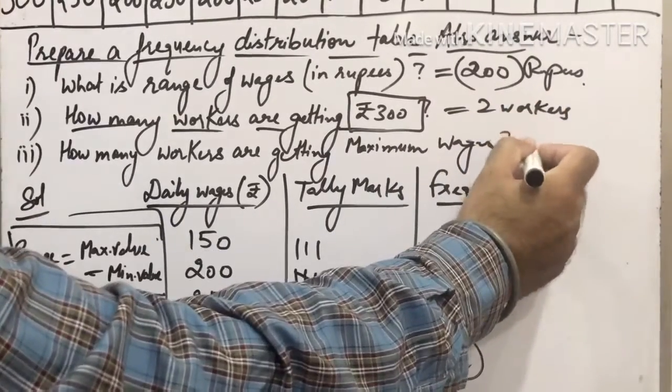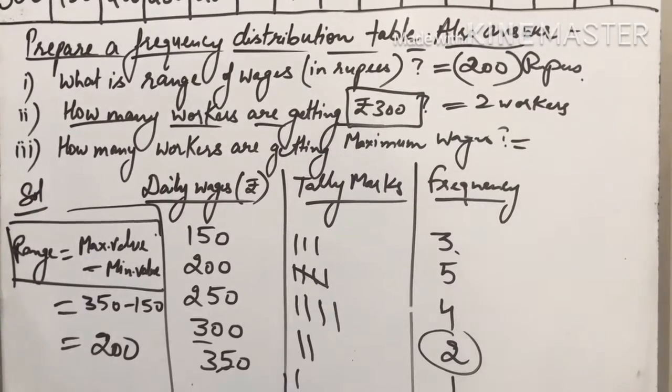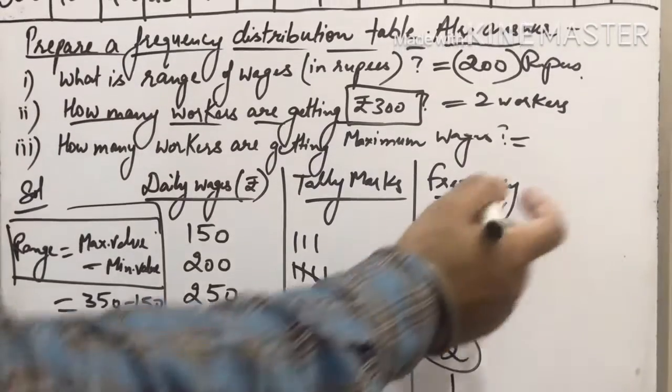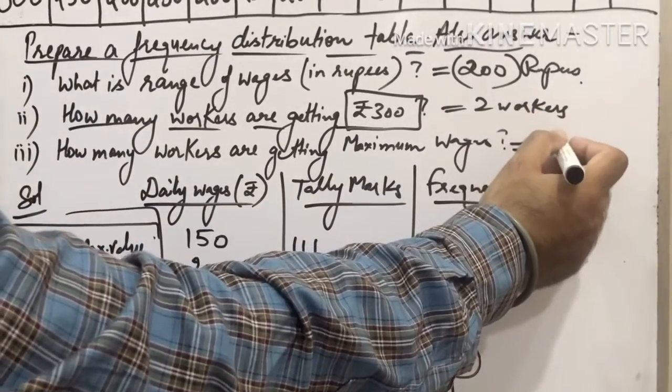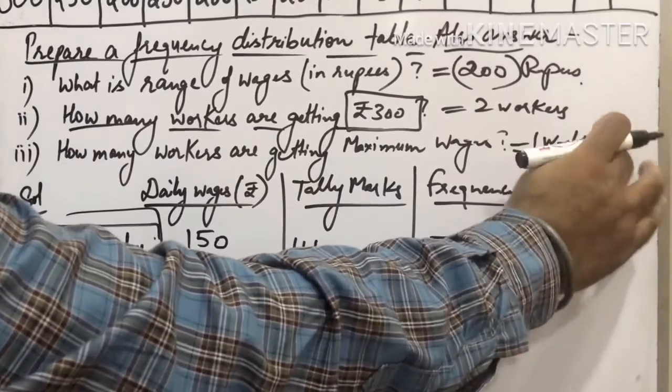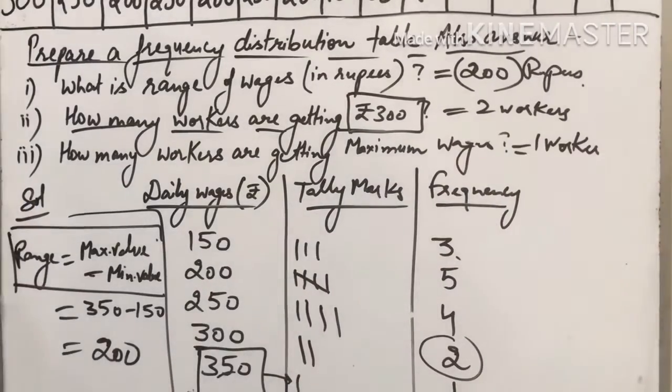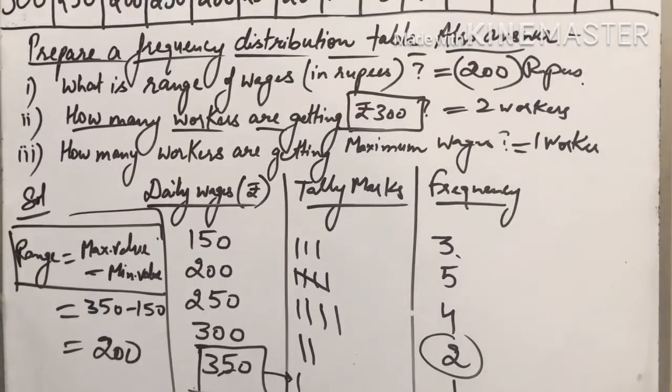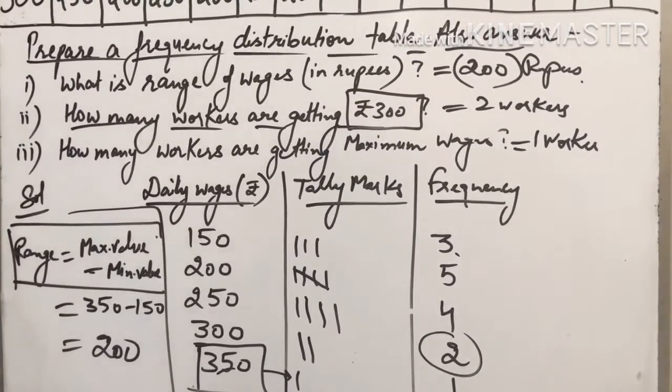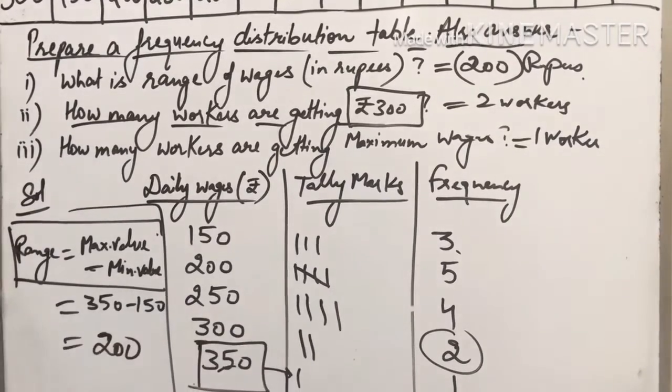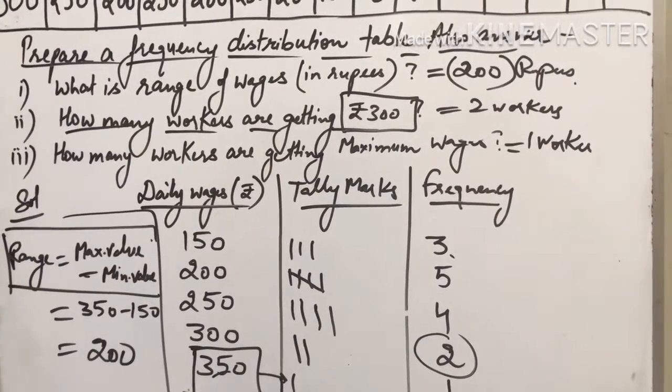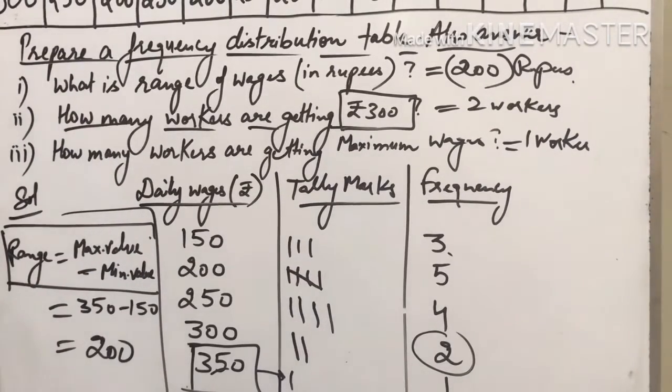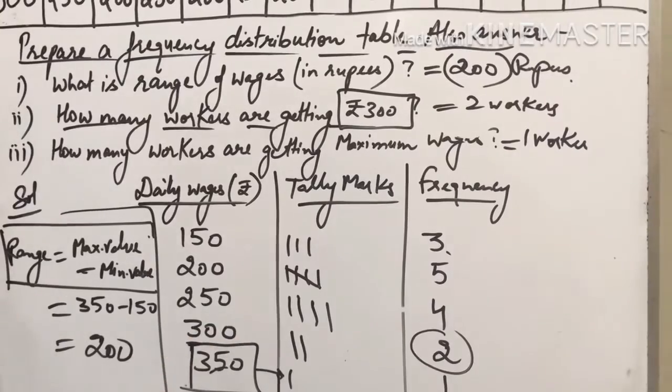And what about the third one? How many workers are getting maximum wages? Maximum wage is how much? 350. And how many have that? There is only one worker which is getting maximum wage. So from the table, you can see the frequency and answer: 300 has 2 workers, and 350, the maximum wage, has only one worker.